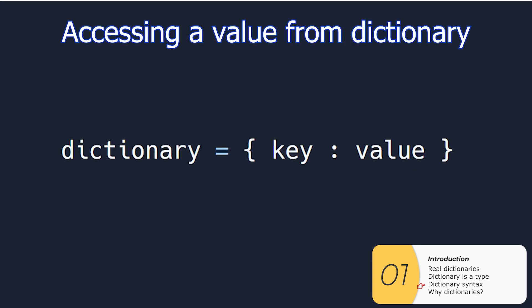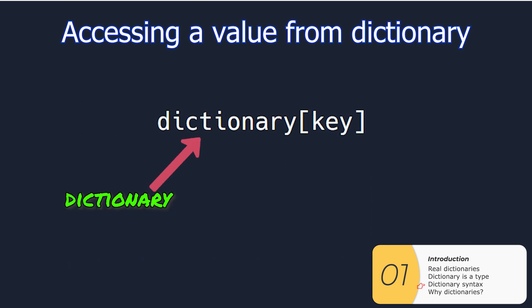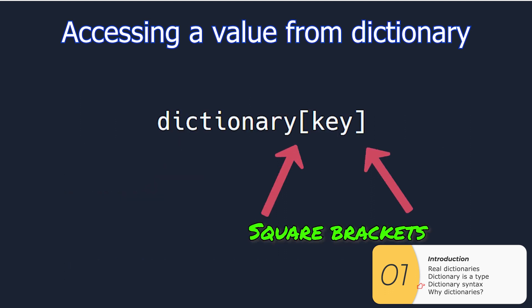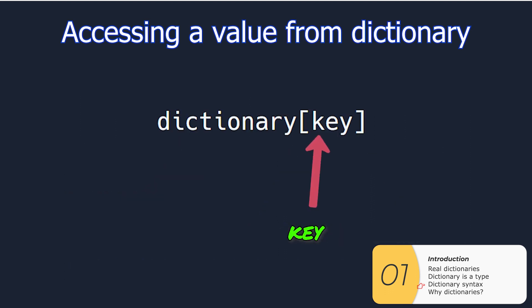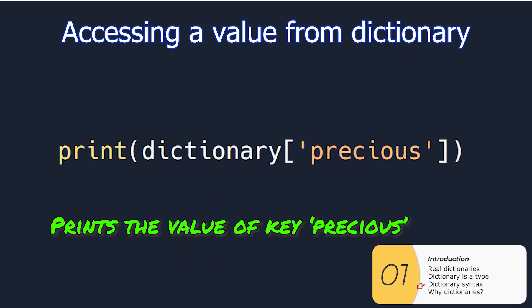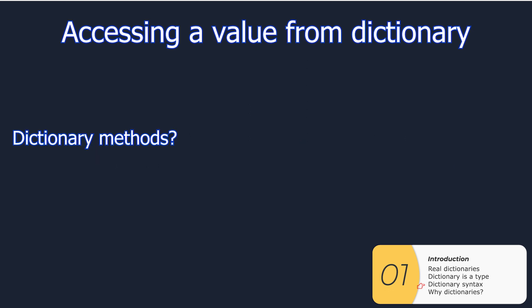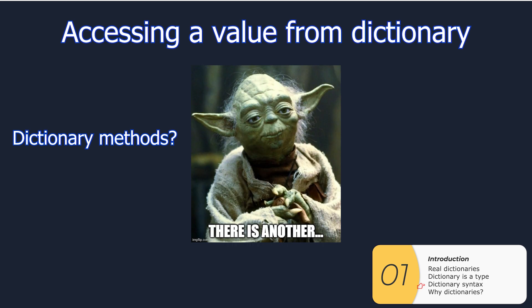If I want to access a value from a dictionary and I know the key, I do dictionary with square brackets and the key, and the whole thing together gives the value. So in this example, this prints the value of the dictionary for the key 'precious'. There is another way to do this with dictionary methods, but that's a little harder for new folks, so I'll show that later.